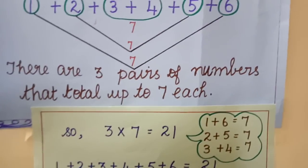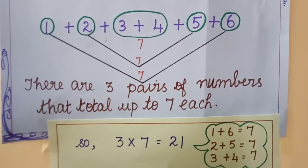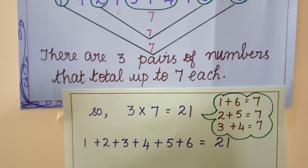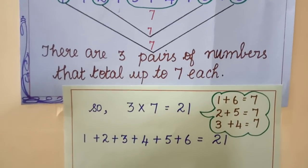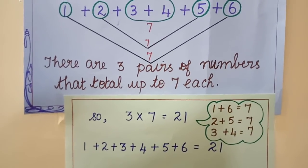So therefore we can say 3 times 7 gives you 21. Therefore 1 plus 2 plus 3 plus 4 plus 5 plus 6 is equal to 21.